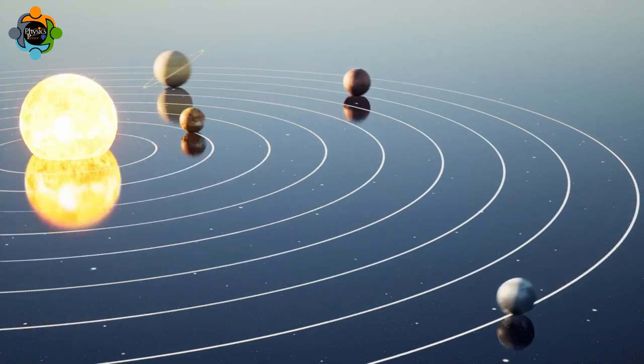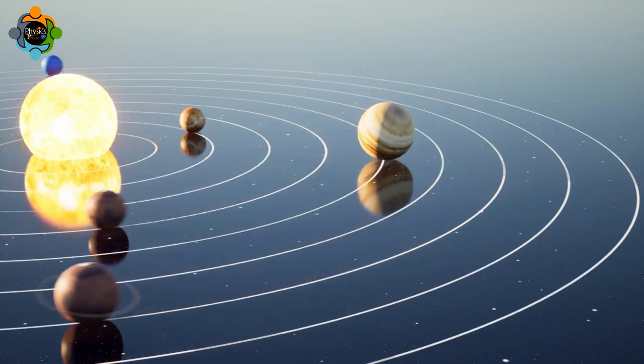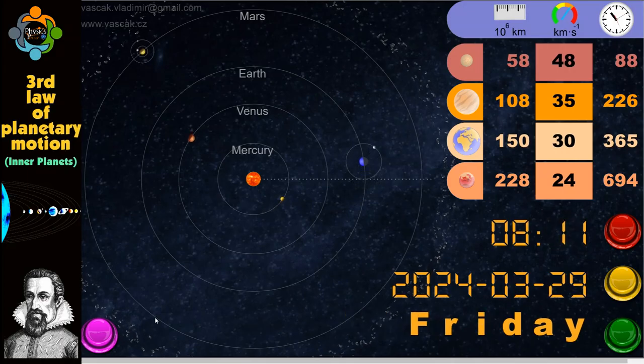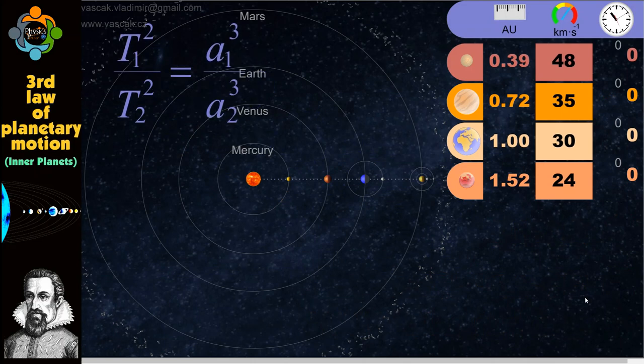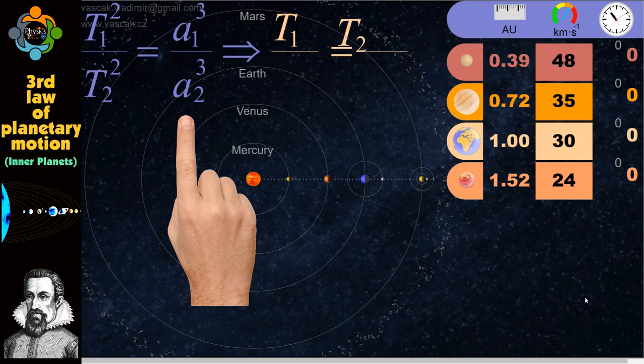planet's distance from the Sun, with planets farther from the Sun taking longer to orbit than those closer to it. Kepler's third law states that the square of a planet's orbital period is proportional to the cube of its average